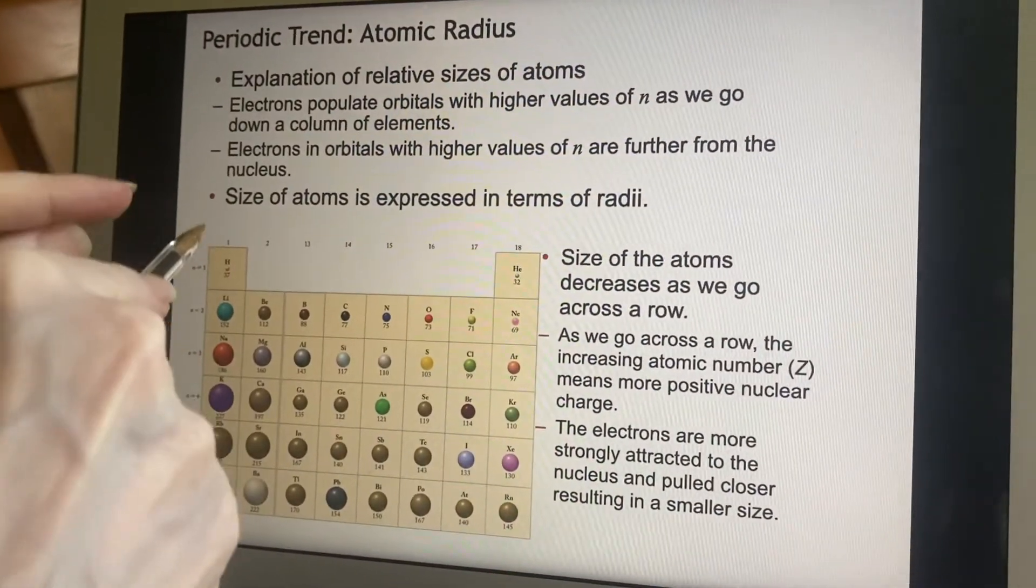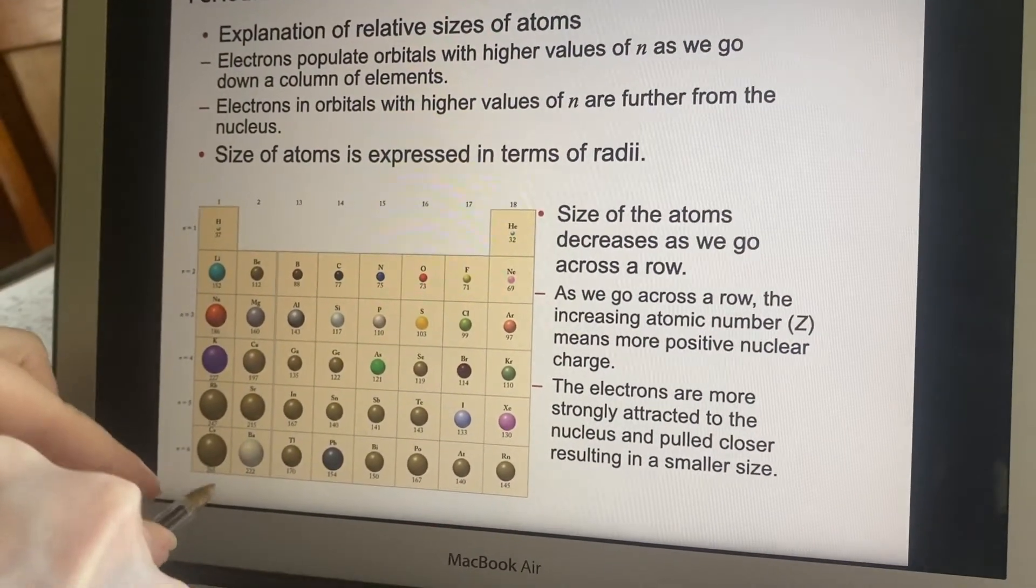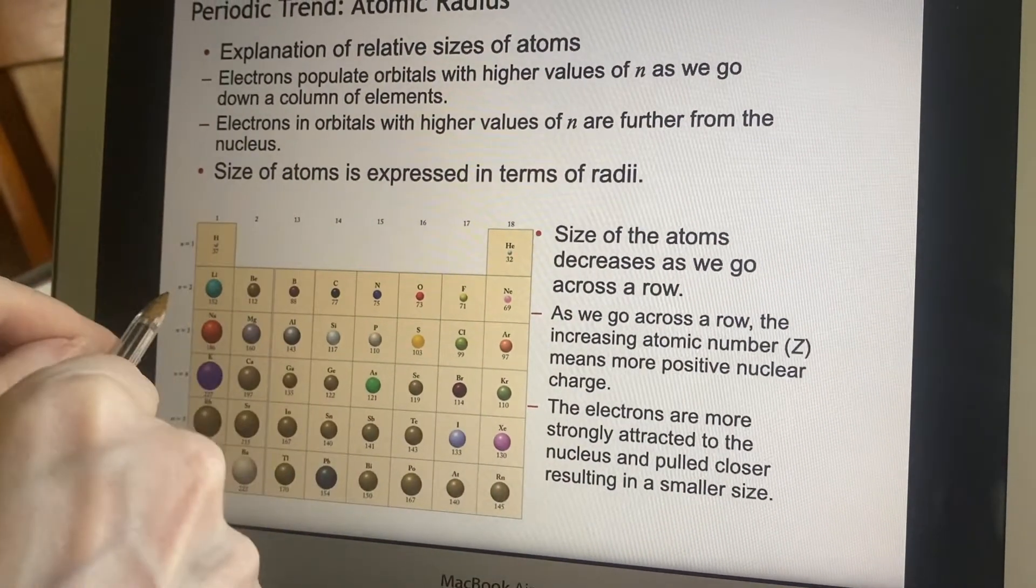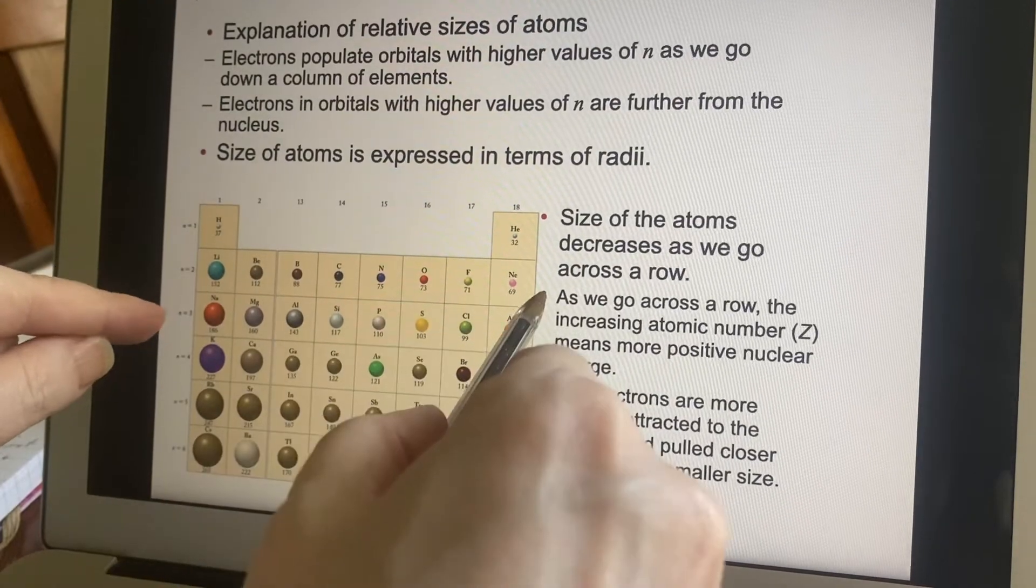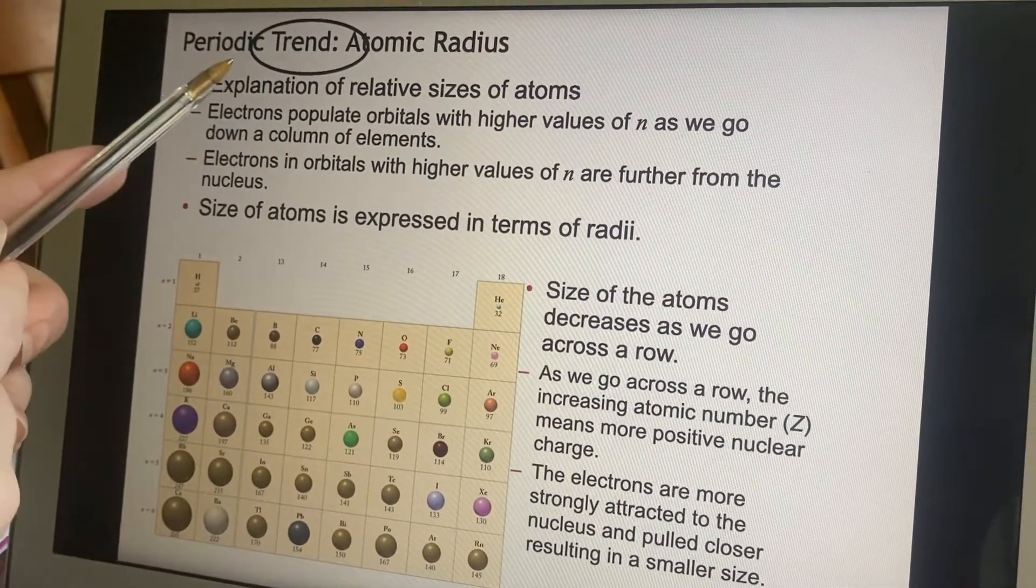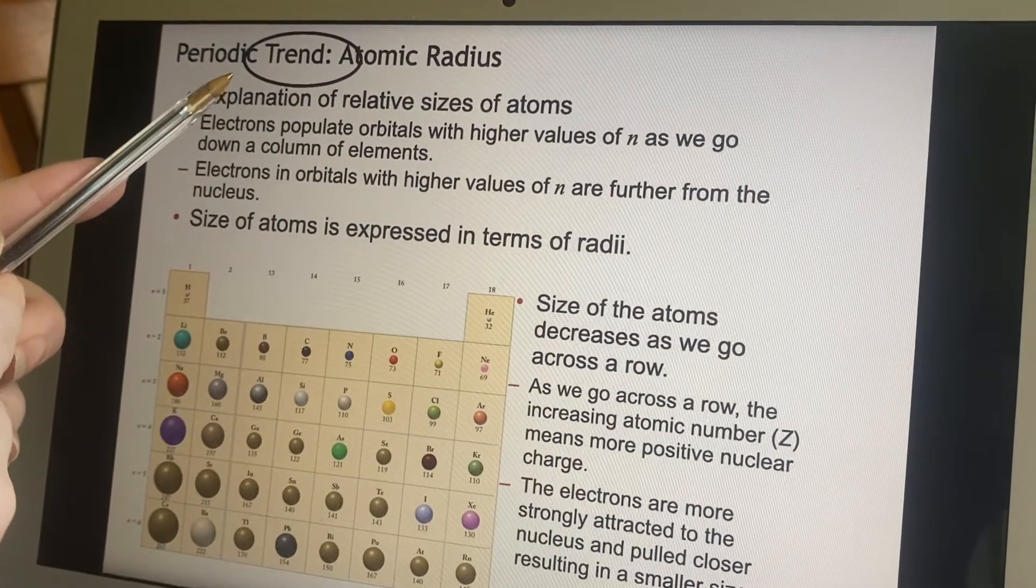So this is the first trend that you should try to memorize: atomic radius goes higher as you go down the chart—that one makes sense—but atomic radius gets smaller as you go across the chart. That's the strange one.